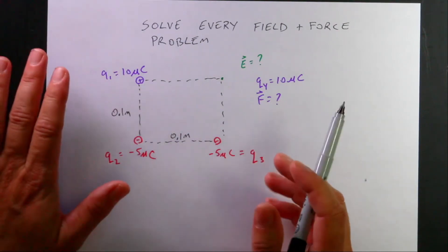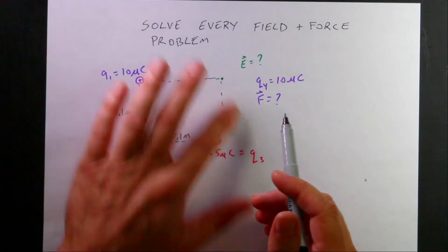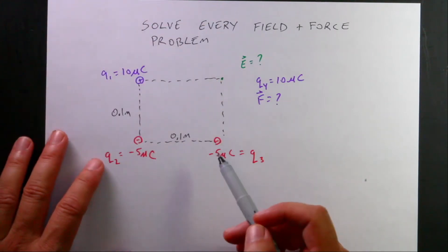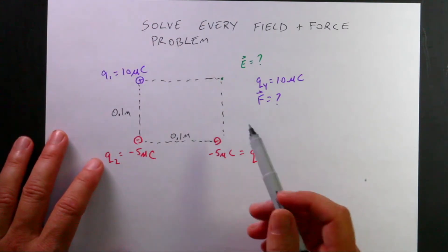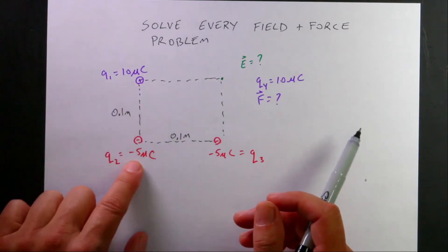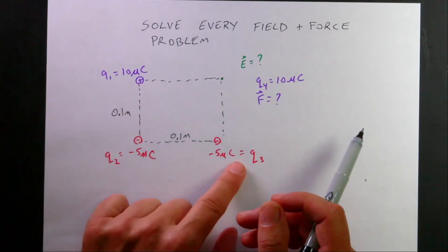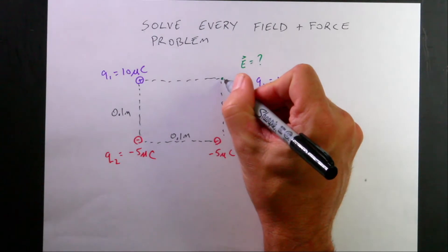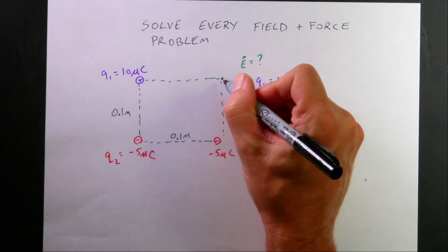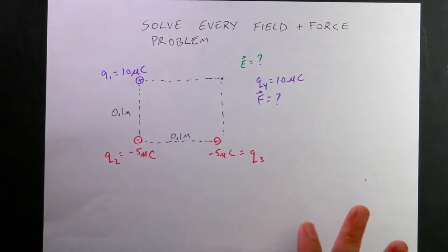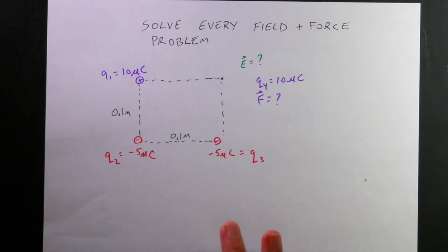There are two versions of this problem. There's an artificial square with three or four charges — let's say three: a plus 10 microcoulomb, minus 5 microcoulomb, and minus 5 microcoulomb. They want you to either find the electric field at the empty corner, or put another charge there and find the force. I'm going to do both: first find the electric field, then find the force.